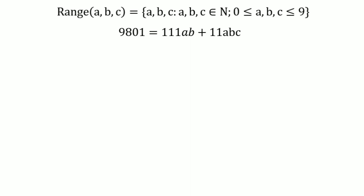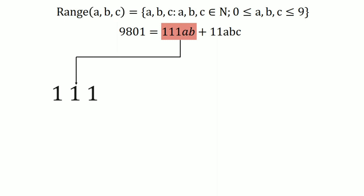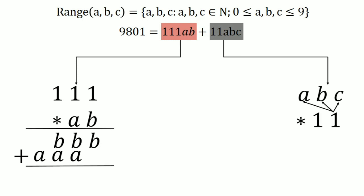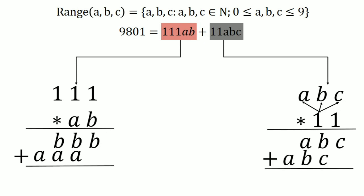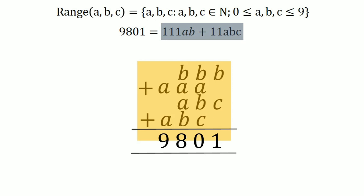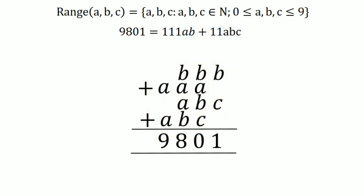Focusing on 111 × ab: multiplying b by all ones gives b, b, b; multiplying a by all ones gives a, a, a, shifted one unit left. For 111 × abc: multiplying one by a, b, c gives abc; the second multiplication is also abc shifted one unit left. Adding both products together yields 9801.